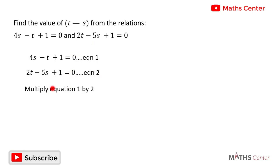I'll begin by multiplying equation 1 by 2. If I multiply equation 1 by 2, I'm going to have 8x minus 2t plus 2 equals zero. I'll call this new equation equation 3.